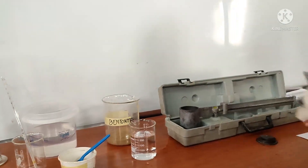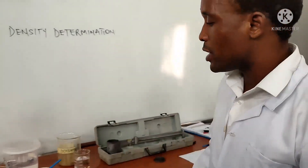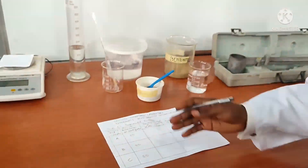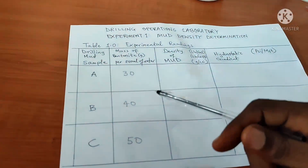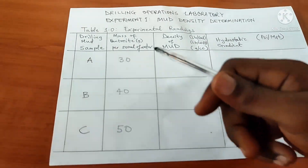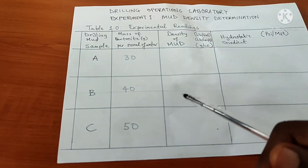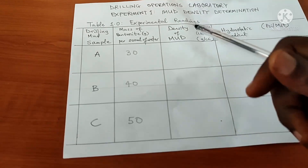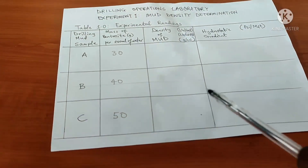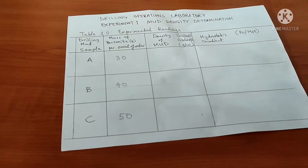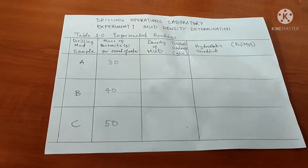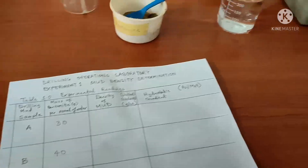Before we start measuring the mud density, we have to measure and prepare the mud according to the data on this table. Sample A: we are going to measure bentonite of 30 grams per 200 ml of water. Sample B: bentonite of 40 grams per 200 ml of water. Sample C: bentonite of 50 grams per 200 ml of water. For the purpose of this demonstration, we are going to use Sample A and test it using the mud balance.